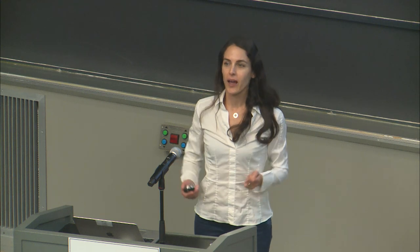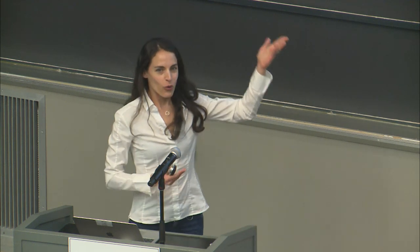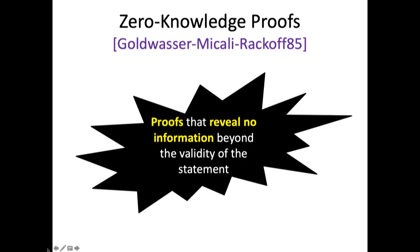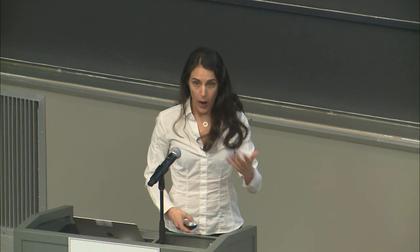So the idea is: let's not use classical proofs — let's use something else. This brings me to a really beautiful notion from the mid-1980s by Goldwasser, Micali, and Rackoff, where they defined the notion of zero knowledge proofs. What is a zero knowledge proof? The idea was to come up with proofs that reveal no information whatsoever about the statement beyond its validity. I don't want to give you information about why the statement is true, only the fact that it is true.